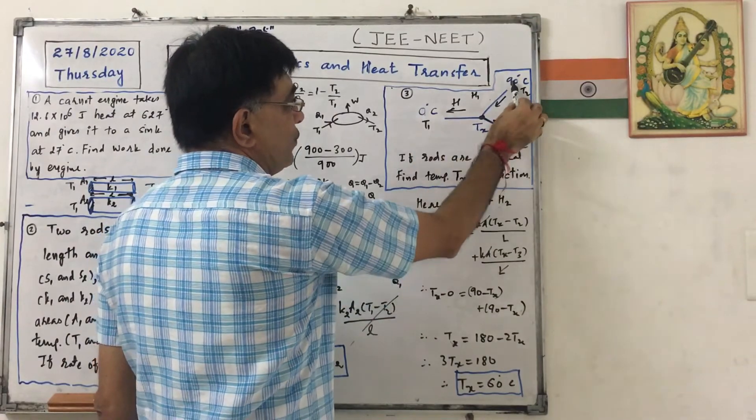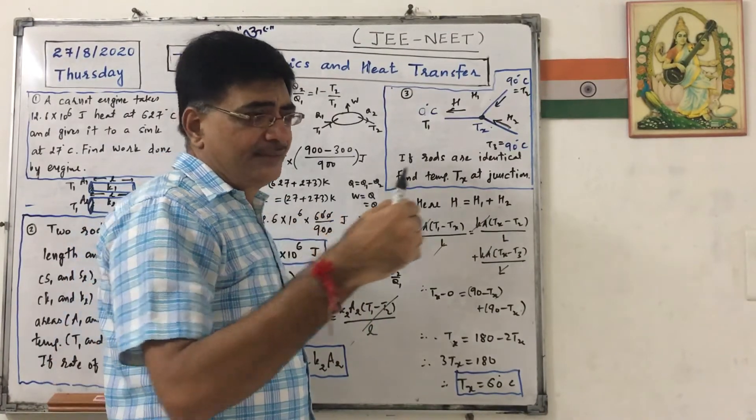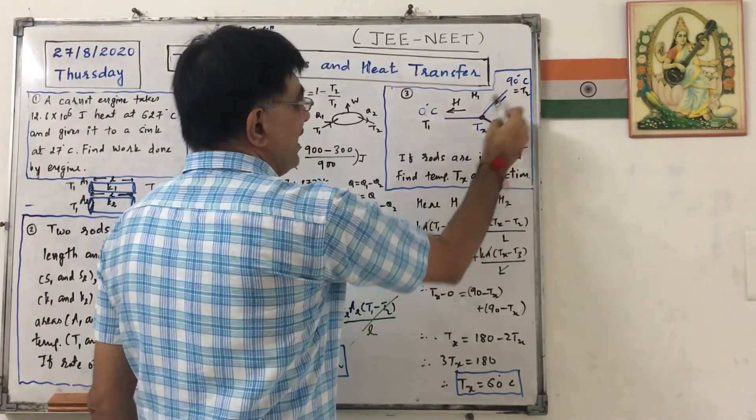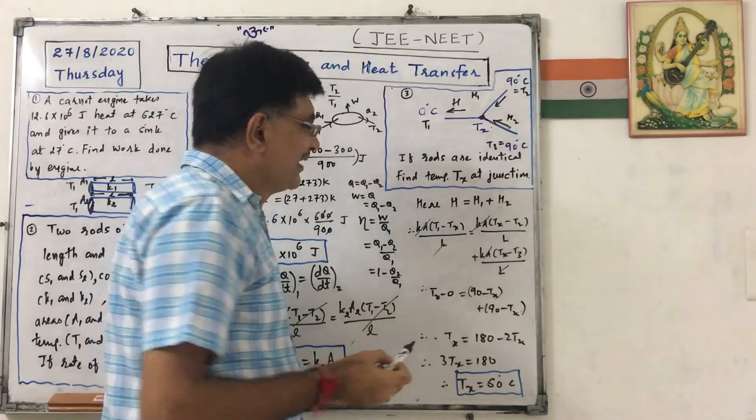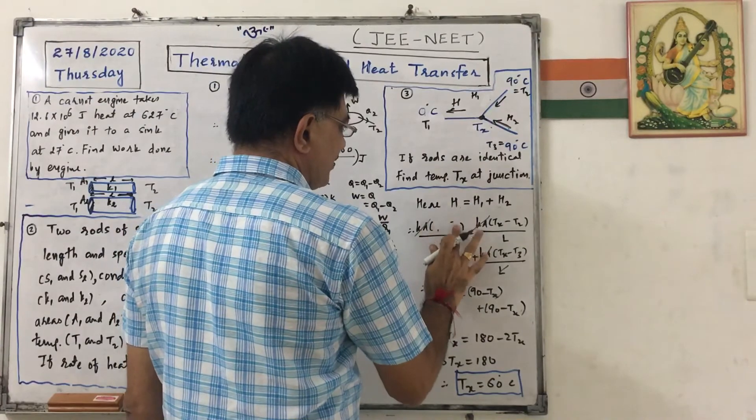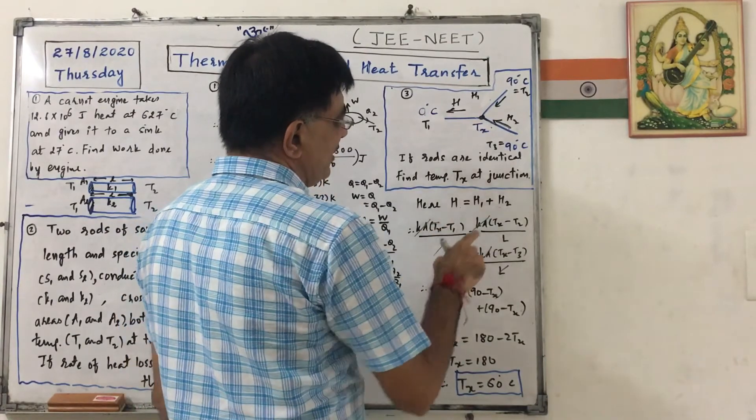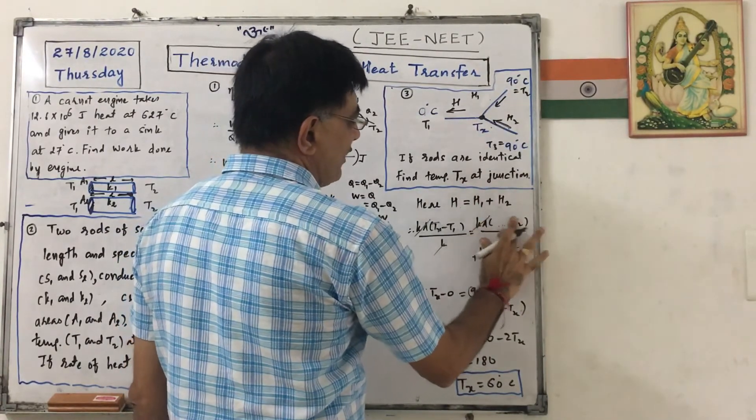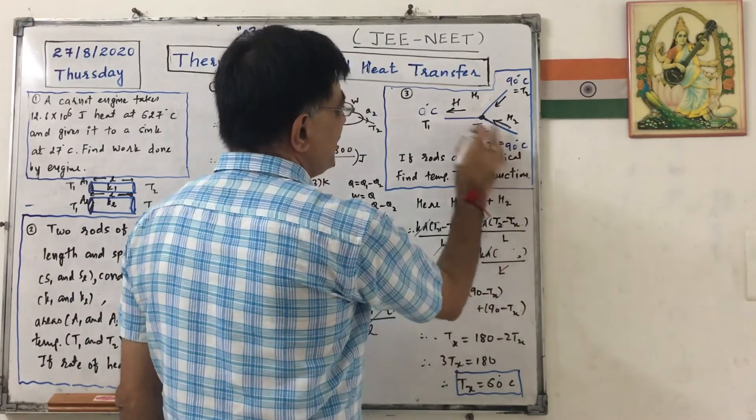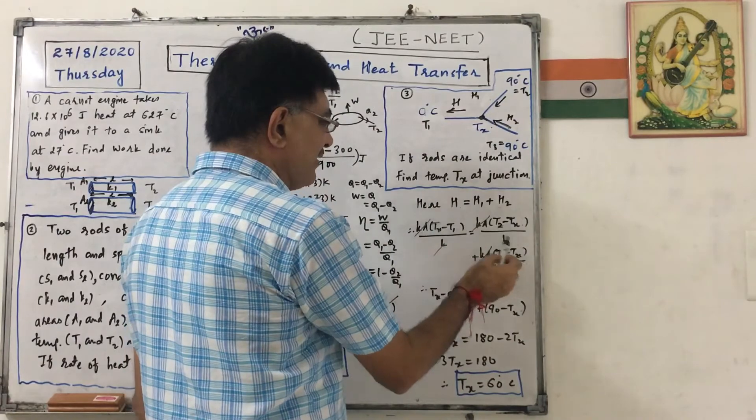See, here temperature is given 0 degree Celsius, so flow will be in this direction. Always heat flows from higher temperature to lower temperature. So here I can write H equals to H1 plus H2. So H equals to KA by L into Tx minus T1, equals to KA by L into T2 minus Tx, and truly we should write like this, and here it is T3 minus Tx. So KA by L will be cancelled.